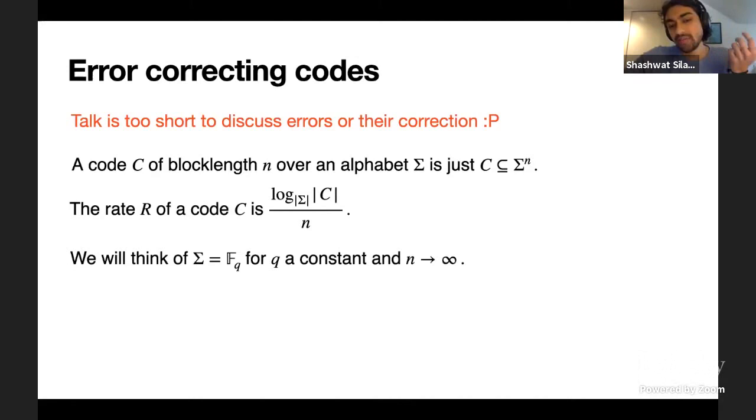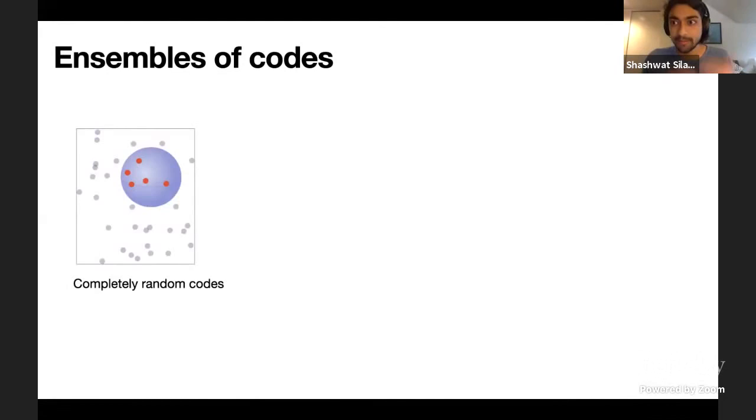So a code is just a subset of all strings over an alphabet of length n over an alphabet sigma. And the rate is kind of a proxy for its size. It's just the log of its size divided by the block length. And in this talk, we'll think of the alphabet always as FQ. So you can think of a code as just a subset over a high dimensional vector space. And I study the combinatorial properties of error correcting codes. So if you study combinatorics, you often know that random objects have very ideal properties. So we should study random ensembles of codes to sort of get a sense of what is possible with error correcting codes. It's a very natural thing to study is just a completely random code, which is you just pick a subset of a certain size, completely random, in which every point is independently chosen completely randomly of each other. Or you can study slightly more structured subsets, which are, for example, random subspaces.